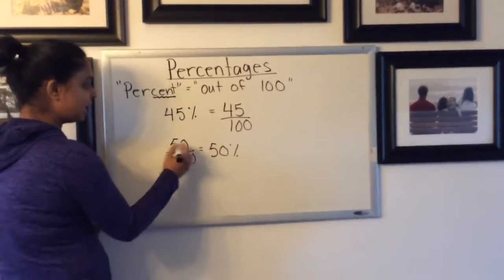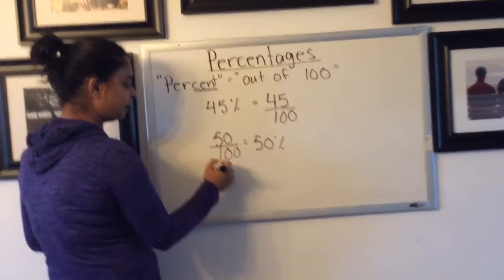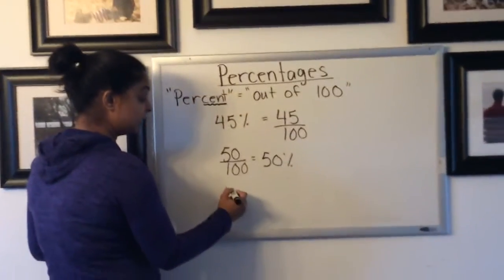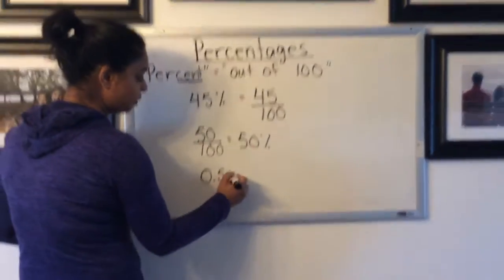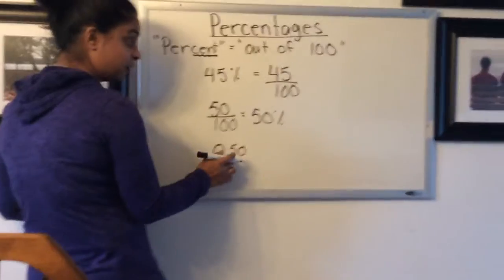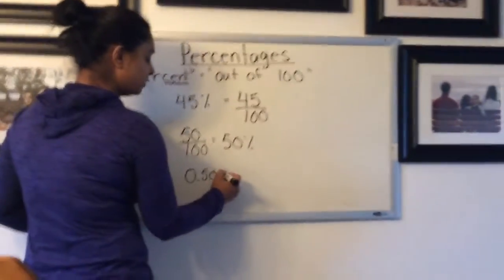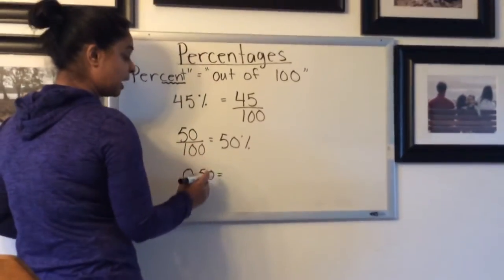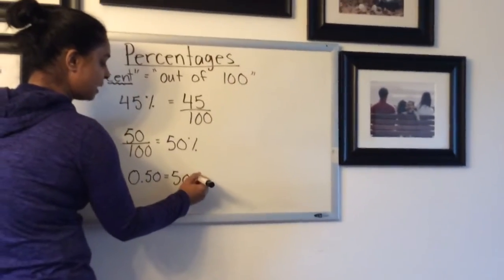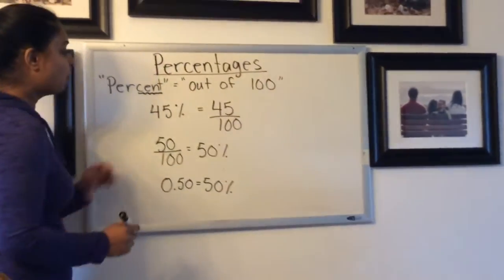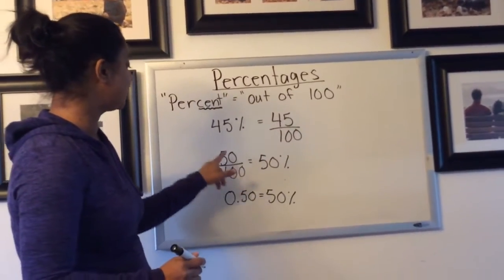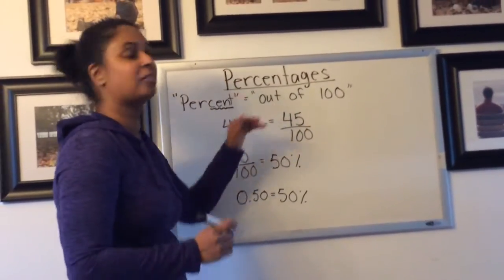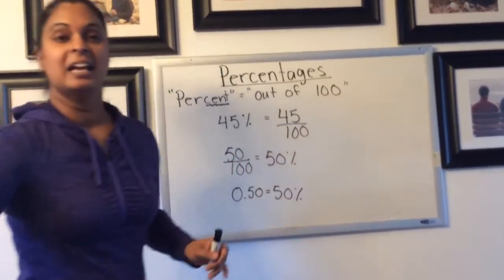If you see the same representation in decimal form, 0.50 would also be 50 hundredths but written as a decimal. That's also considered to be out of 100, so that also means 50%. All of these are very easy to transition back and forth between because we can see and work with the out of 100.